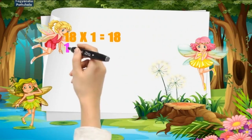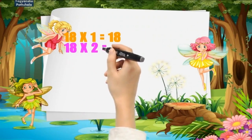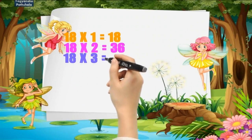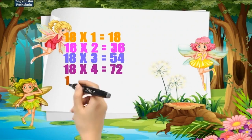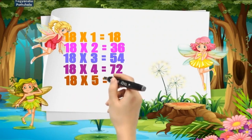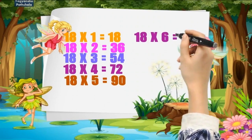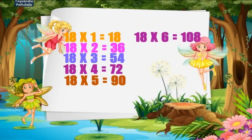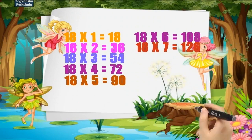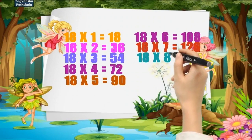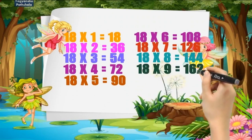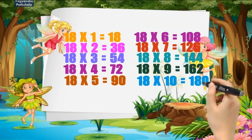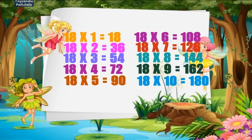18 times 1 is 18, 18 times 2 is 36, 18 times 3 is 54, 18 times 4 is 72, 18 times 5 is 90, 18 times 6 is 108, 18 times 7 is 126, 18 times 8 is 144, 18 times 9 is 162, 18 times 10 is 180.